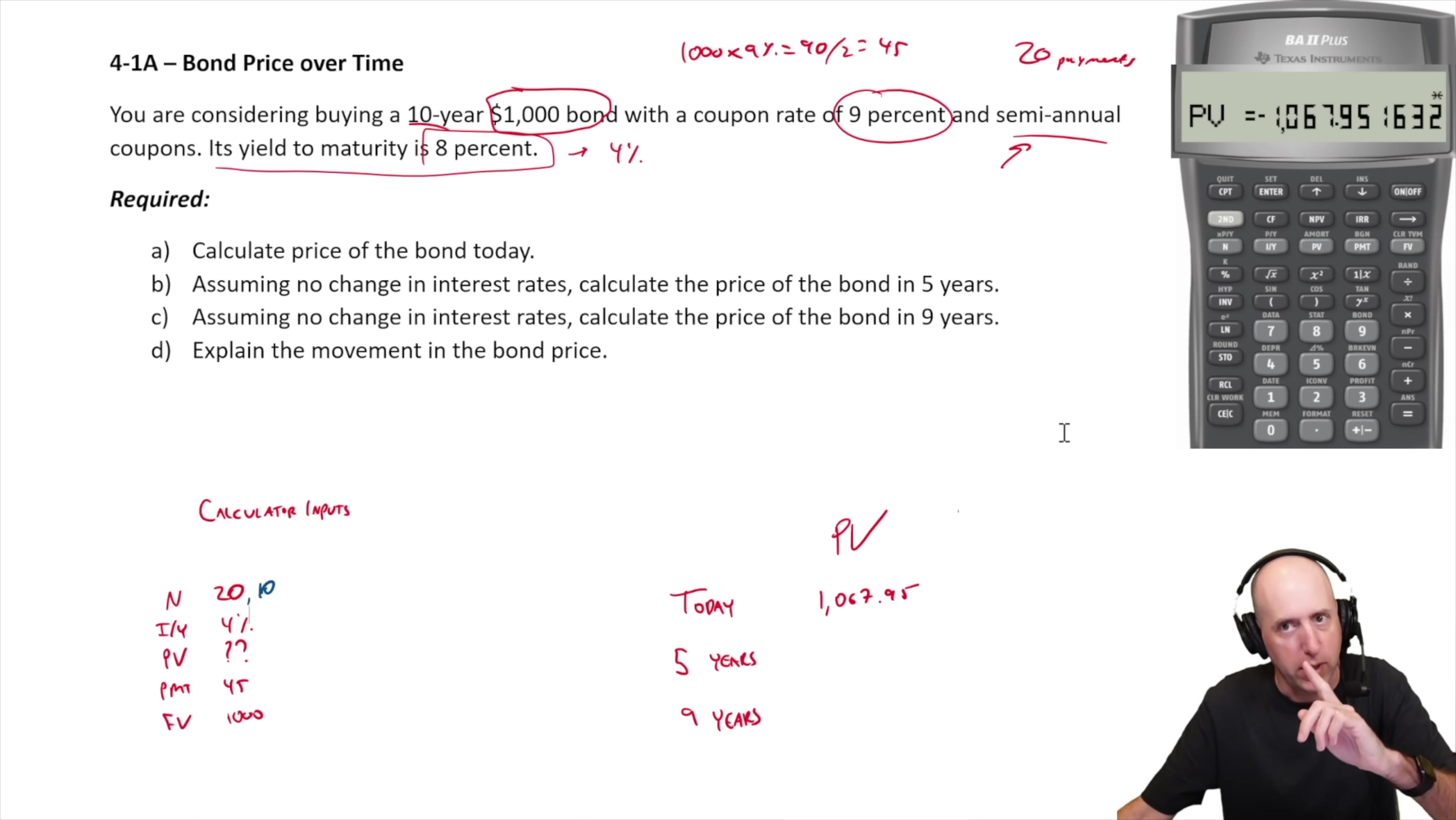Everything else is equal. So again, nice feature of the financial calculator. All I do is put in 10 as N. I could re-input everything, but it's already in there. So now I compute PV and I get 1040.55. That's the answer. Assuming no changes, calculate the price of the bond in five years. It's 1040.55.